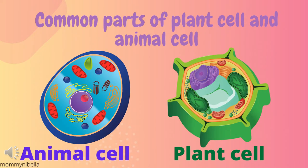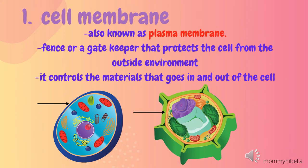Common parts of plant cell and animal cell. Number one: cell membrane, also known as plasma membrane. It acts as a fence or gatekeeper that protects the cell from the outside environment. It controls the materials that go in and out of the cell.